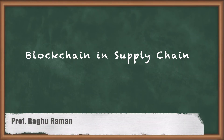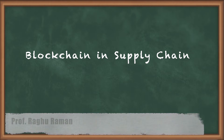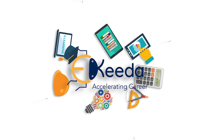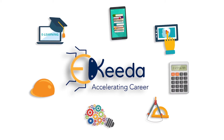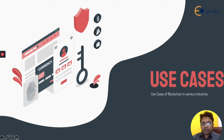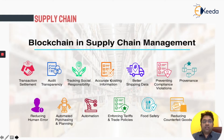Now that we have understood what permissionless blockchains and permissioned blockchains are, we are going to look into the use cases of blockchain — in which industries it is useful and where to apply them. Out of this list, we are first going to look at the supply chain use cases of blockchain technology.